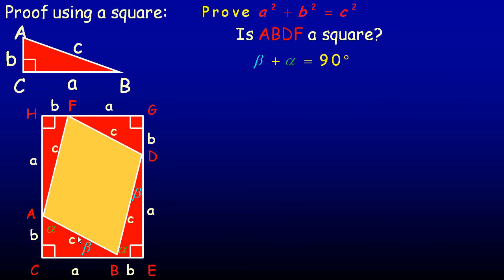Well, if you look at either of these right triangles, I've called the two angles alpha and beta. Because this is the right angle — remember the three angles add to 180 in a triangle — since that angle is 90, alpha and beta would have to add to 90. That 90 plus this 90 makes 180, so beta and alpha must add to 90 degrees.